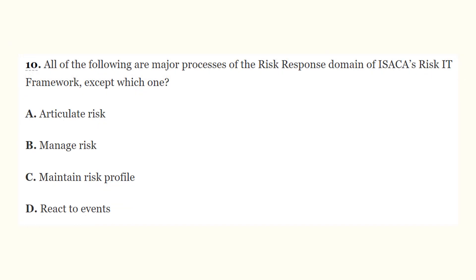Question number ten: all of the following are major processes of the risk response domain of ISACA's Risk IT framework, except which one? The choices are A) articulate the risk, B) manage risk, C) maintain risk profile, D) react to events. The correct answer is C, maintain risk profile. Maintaining risk profile is not a process of the risk response domain — it falls under the risk evaluation domain. The other three — articulate risk, manage risk, and react to events — are the major processes of the risk response domain.